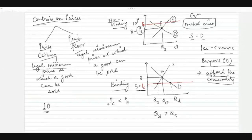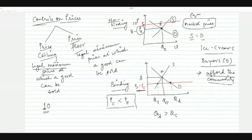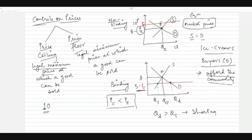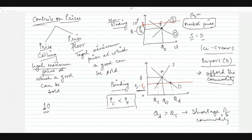When the price ceiling is binding — that is, when the price ceiling is less than the equilibrium price — quantity demanded is greater than quantity supplied, and this creates a shortage of the commodity. If ice cream was selling at rupees 8, supply equalled demand. But at rupees 5, demand exceeds supply.